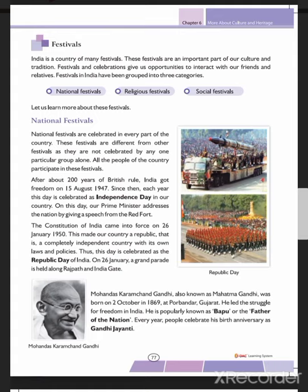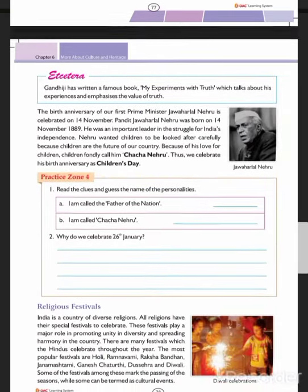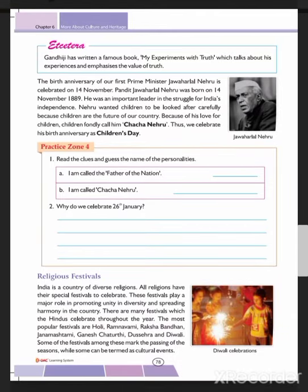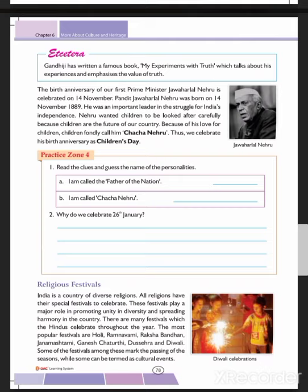Our next national festival is Gandhi Jayanti. Mohandas Karamchand Gandhi, also known as Mahatma Gandhi, was born on 2nd October 1869 at Porbandar, Gujarat. He led the struggle for freedom in India and is popularly known as Bapu or the Father of the Nation. Every year his birth anniversary is celebrated as Gandhi Jayanti. Gandhi also wrote a famous book, 'My Experiments with Truth', which talks about his experiences and emphasizes the value of truth.